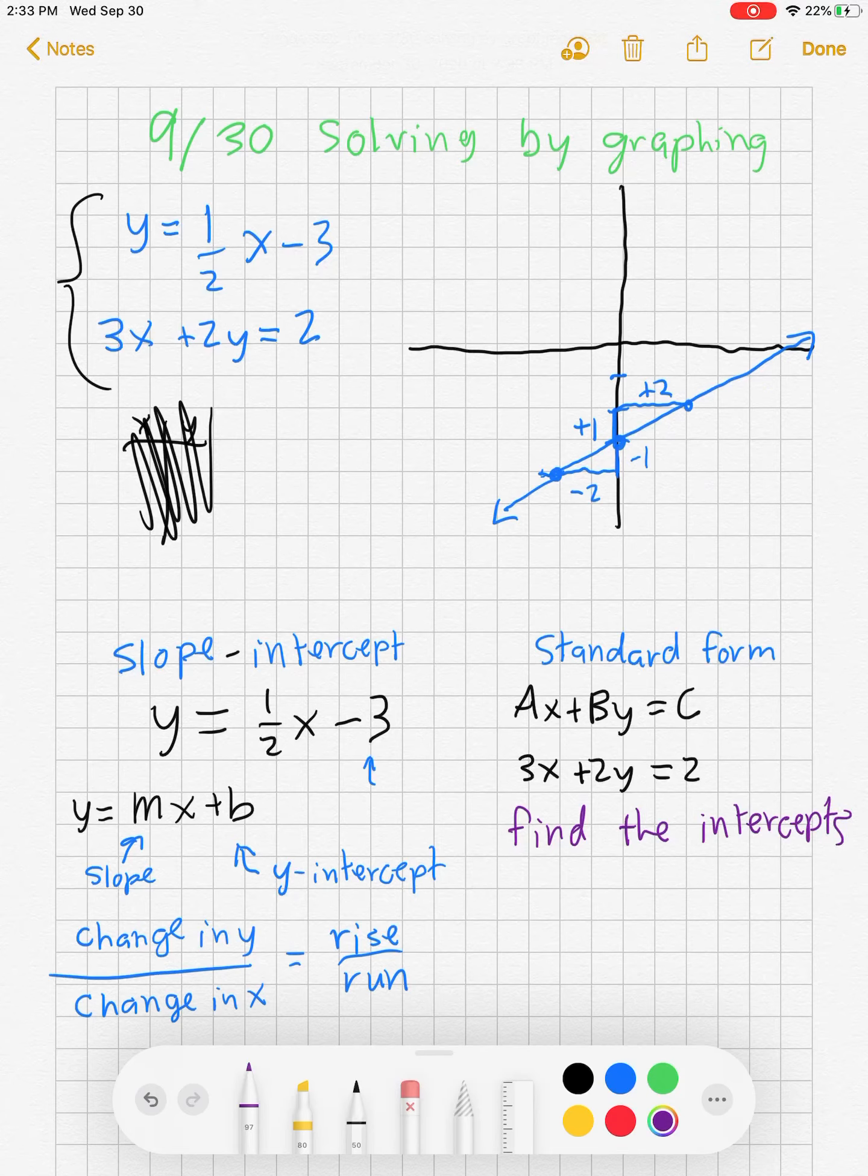Specifically, where the graph crosses the x and y axis. The best way to do that is to plug in zero. So let's plug in zero for x first. Three times zero plus 2y equals 2. That's the same thing as 2y equals 2, or y equals 1. Easy enough to see. So where does that cross the x-axis? Well, when x is zero, y is one, meaning this is our y-intercept. It's going to be that point right there.